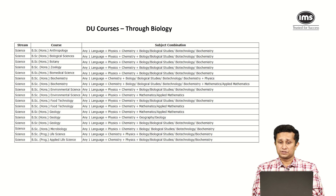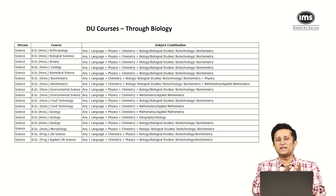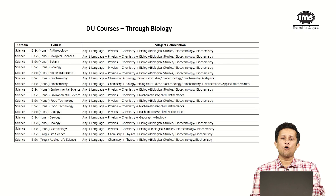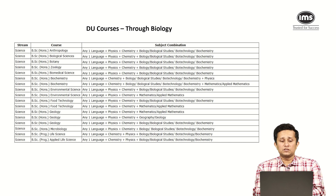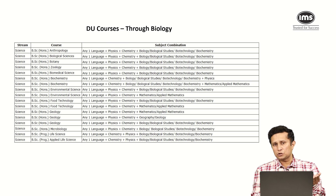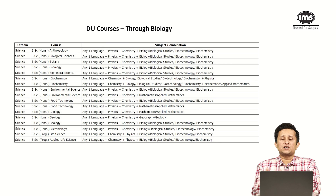If you look at the combination here, most of these have a fixed combination: any one language — in most cases English — plus physics and chemistry; this is fixed. Except for biochemistry, which does not require physics, or requires it only on an optional basis. But otherwise, physics and chemistry is mandatory. For other subjects like anthropology, biological sciences, etc., you can select any one of these four: biology, biological studies, biotechnology, or biochemistry. Whatever you studied in class 12 could also become your domain subject.